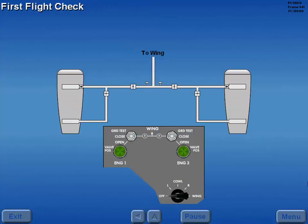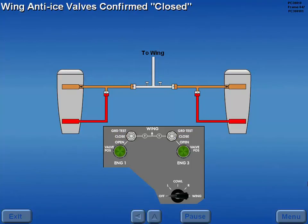Prior to the first flight of the day, the wing anti-ice switches and valves are confirmed closed. With the wing anti-ice switches in the closed position, rotating the selector to wing illuminates the wing anti-ice valve position lights. This confirms that both anti-ice valves on each engine are in agreement with the switch positions.